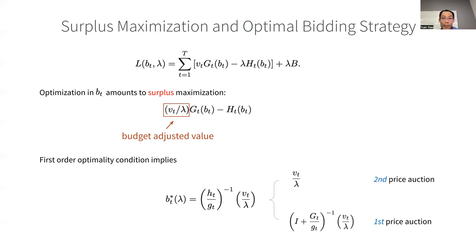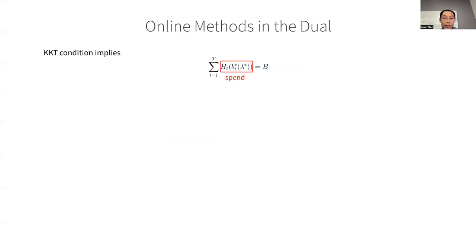The optimal lambda can be obtained by the KKT condition. The KKT condition simply says that we need to match this spend with the budget. Not surprising because if there is any budget left, it can be higher to possibly obtain more results.